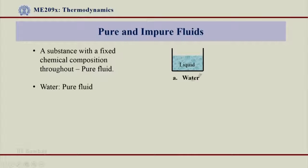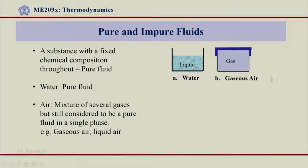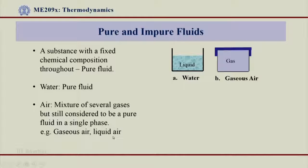For example, water in liquid form I will call a pure fluid — its chemical composition is H2O. Or air — gaseous air — which is a mixture of several gases, but is still considered to be a pure fluid when in a single phase, for example gaseous air or liquid air.